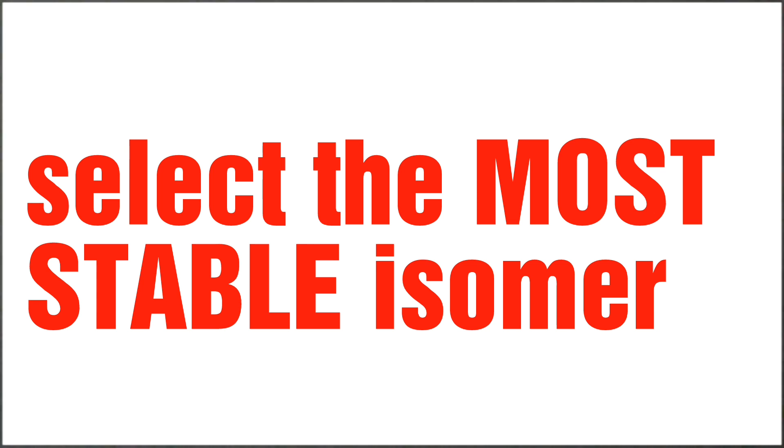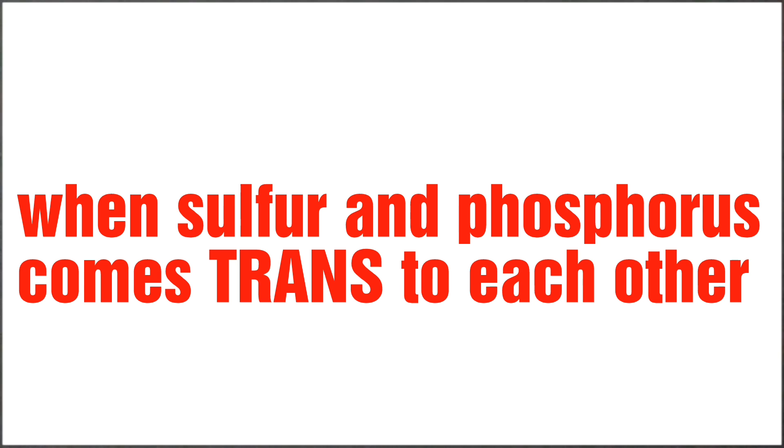Points to remember: we need to select the most stable isomer among the given options. When sulfur and phosphorus come trans to each other, it becomes unstable. Why it happens, I leave it up to you to research on this topic.